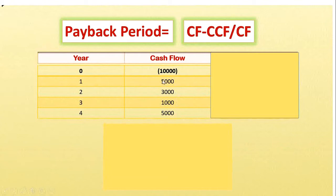If you sum up all the inflows: 5,000 plus 3,000 is 8,000, plus 1,000 is 9,000, plus 5,000 equals 14,000. So we are getting 14,000 total, but we don't need 14,000 — we need to know when we are getting back exactly the 10,000 we have invested.